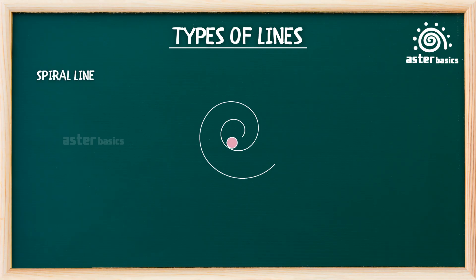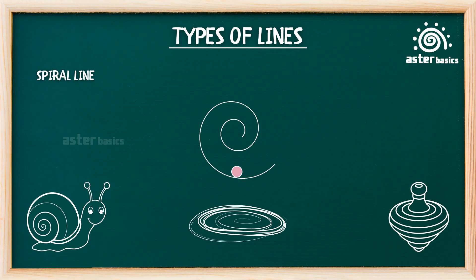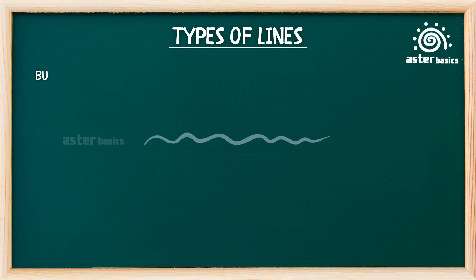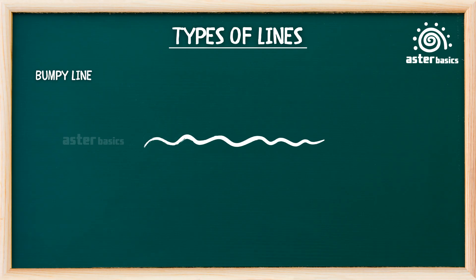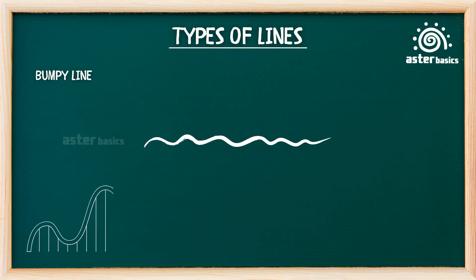Spiral line: a line that starts small and curls outward or inward like a snail shell. Spiral lines are used to draw snails, whirlpools, or spinning tops. This line loves spinning, like a snail's house or a galaxy in space — it starts at the center and twirls away like magic. Bumpy line: a line with gentle hills and lumps, like tiny bumps all along the way. Bumpy lines are used to draw uneven roads, rocky trails, or monster backs. It's like your pencil is riding over tiny bumps on a country road.